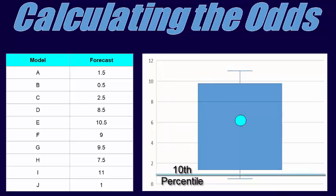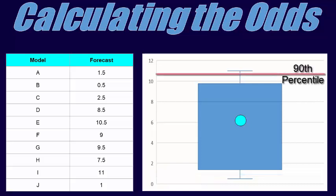The 10th percentile, 1 inch, is a reasonable best-case scenario and can be used as your bottom line so that you are prepared for at least that much occurring. In this example, there is a 90% chance that at least 1 inch of snow will fall, and only a 10% chance that less than an inch will accumulate. The 90th percentile, 10.6 inches, is a reasonable worst-case scenario and can help you prepare for the more extreme possibility. In this example, there is only a 10% chance that more than 10.6 inches of snow will fall, and a 90% chance of less than that amount.